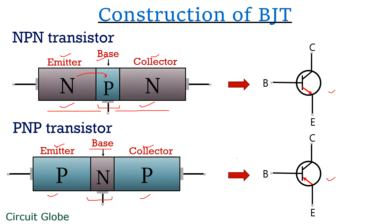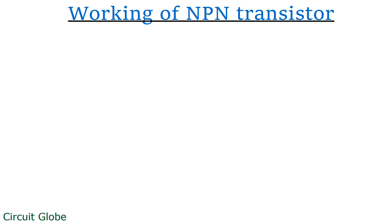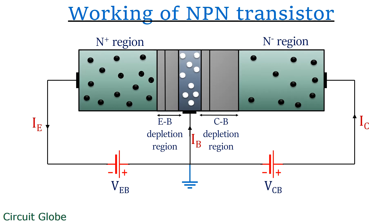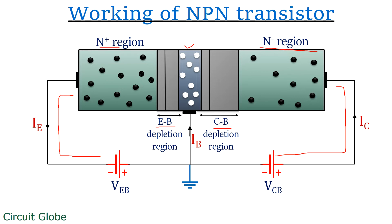We will now discuss the working of NPN transistors. The figure here shows an NPN transistor with majority and minority charge carriers. The emitter-base junction is forward biased while the collector-base junction is reverse biased. This is so because the N emitter region is connected to the negative terminal of the battery, while the N collector region is connected to the positive terminal of the battery. At the time of construction, the N region must be highly doped, the base must be lightly doped, and the collector region must be moderately doped. The emitter-base junction must be forward biased and the collector-base junction must be in reverse biased condition for proper operation.